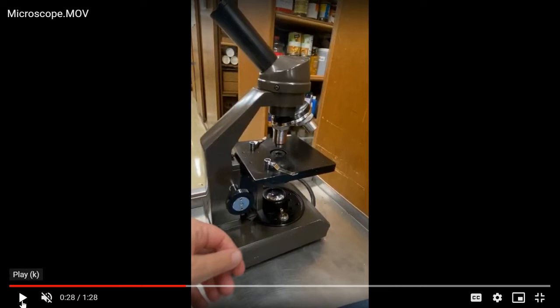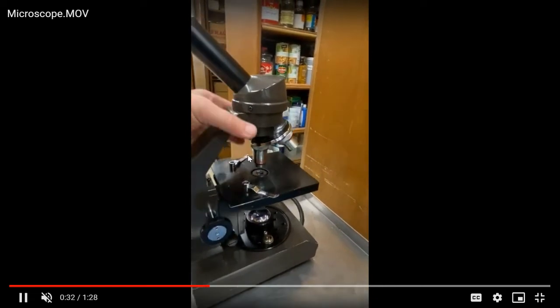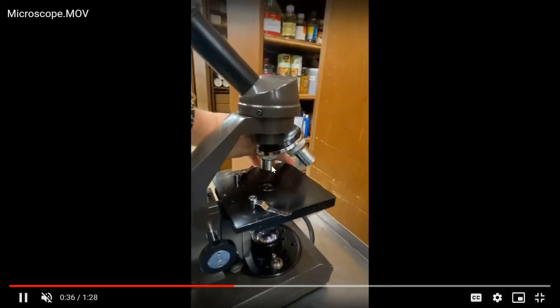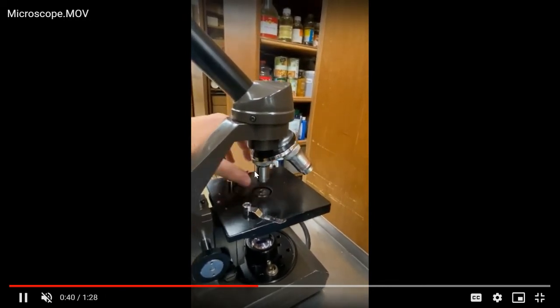This specific compound light microscope has what we call these stage clips, and it has three different objective lenses. It has low power, which is the shortest, medium power, which is a little bit stronger, and then the high power objective lens.